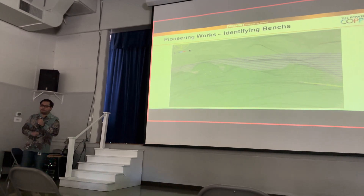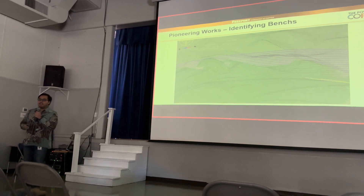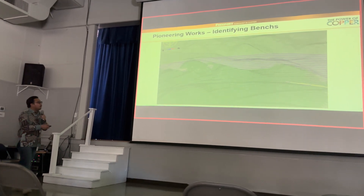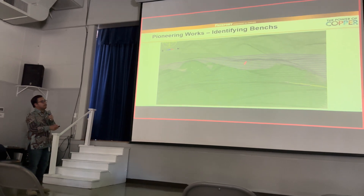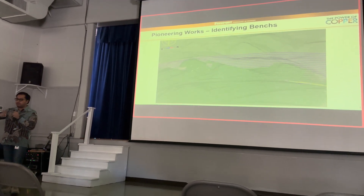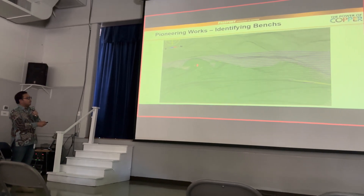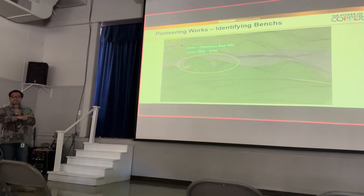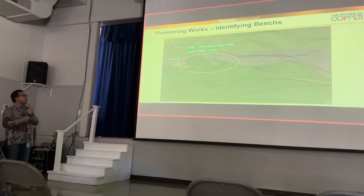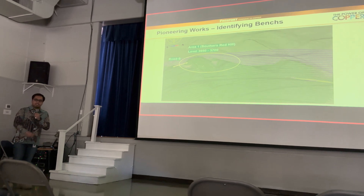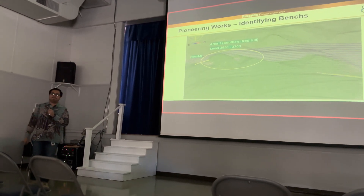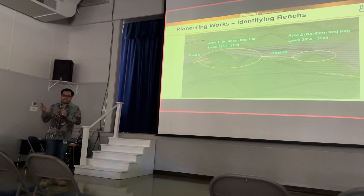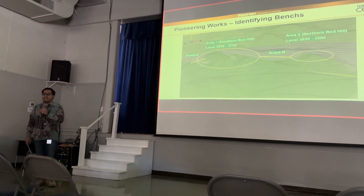After creating the new design, we tried to identify which benches need primary work. A primary work area is identified when you see the blue and magenta lines, meaning there is no existing surface or survey above it — so how do you mine this area without any existing surface? We identified the first area as the Southern Red Hill, and we need to create a new access road for this project, which we'll name Road S, or Road South. The second area is Northern Red Hill, and we need to create another access road, which we'll call Road M, or Road North.